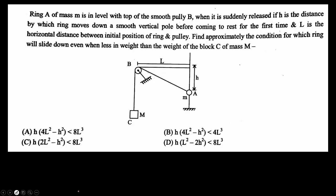So here we have a ring of mass small m in level with top of the smooth pulley B. When it is suddenly released, if h is the distance by which the ring moves down a smooth vertical pole before coming to rest for the first time, and L is the horizontal distance between the initial position of the ring and the pulley, find approximately the condition for which the ring will slide down even when less in weight than the weight of the block C of mass capital M.